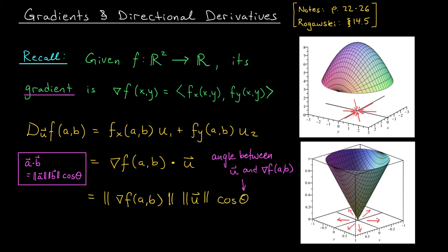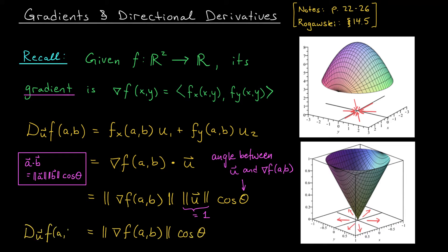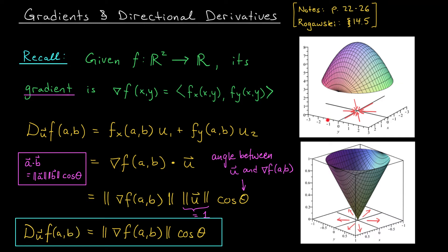But hold on — don't we know something about this vector u? From the very start of our discussion on directional derivatives, u was assumed to be a unit vector, so its norm is equal to one. This tells us that the directional derivative of f at ab in the direction of u is equal to the norm of the gradient at ab times cos theta, the angle between del f and u. This formula is extremely important and is the key to understanding that unusual behavior.